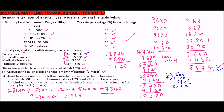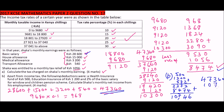Adding the income tax of eight thousand four hundred and seventy-four shillings to the other deductions of two thousand two hundred and seventy-two shillings gives total deductions of ten thousand seven hundred and forty-six shillings. Subtracting this from the total earnings of forty-seven thousand three hundred and forty shillings, Shaka's net take-home income is thirty-six thousand five hundred and ninety-four shillings.